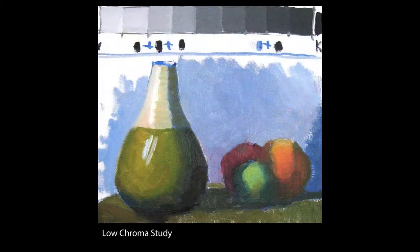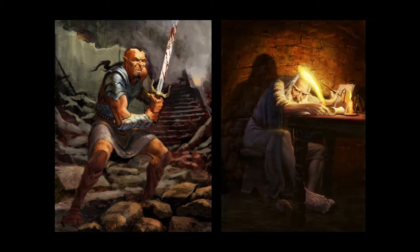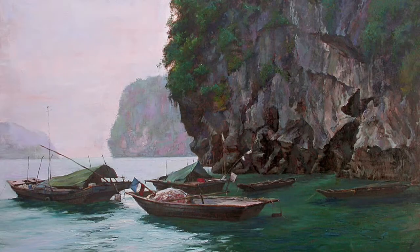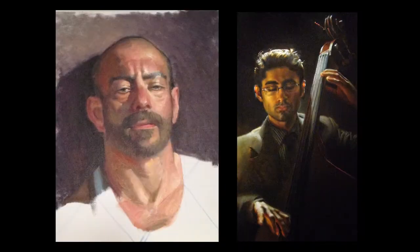We'll learn to identify the colors surrounding us — what their gray properties are and the root color that they actually are. We'll learn the temperature of everything around us. That'll help us mix a better color. We're going to learn how to break local color apart from the color of the light and the color of the indirect light, or bounce light, if we're talking about the shadows.